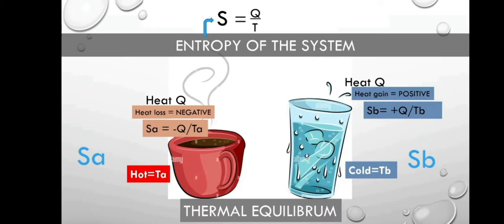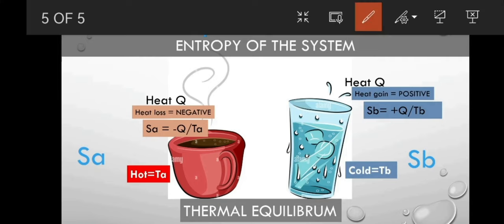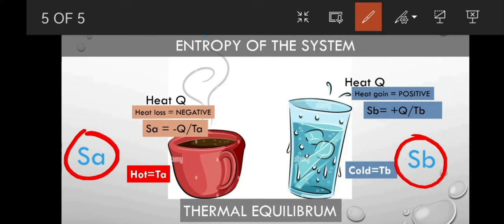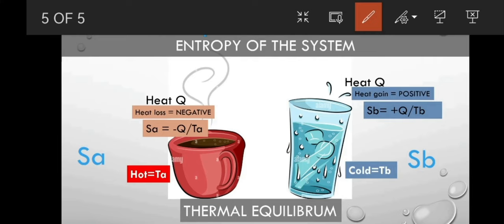Now let's discuss the entropy of a system. We have two objects: the hot object and the cold object. The hot object in our slide is represented by coffee, and the cold object is represented by iced water. Let's call the hot object System A and the cold object System B. We've learned that the hot object transfers heat to the cold object until both objects reach equal temperature — that state is known as thermal equilibrium.